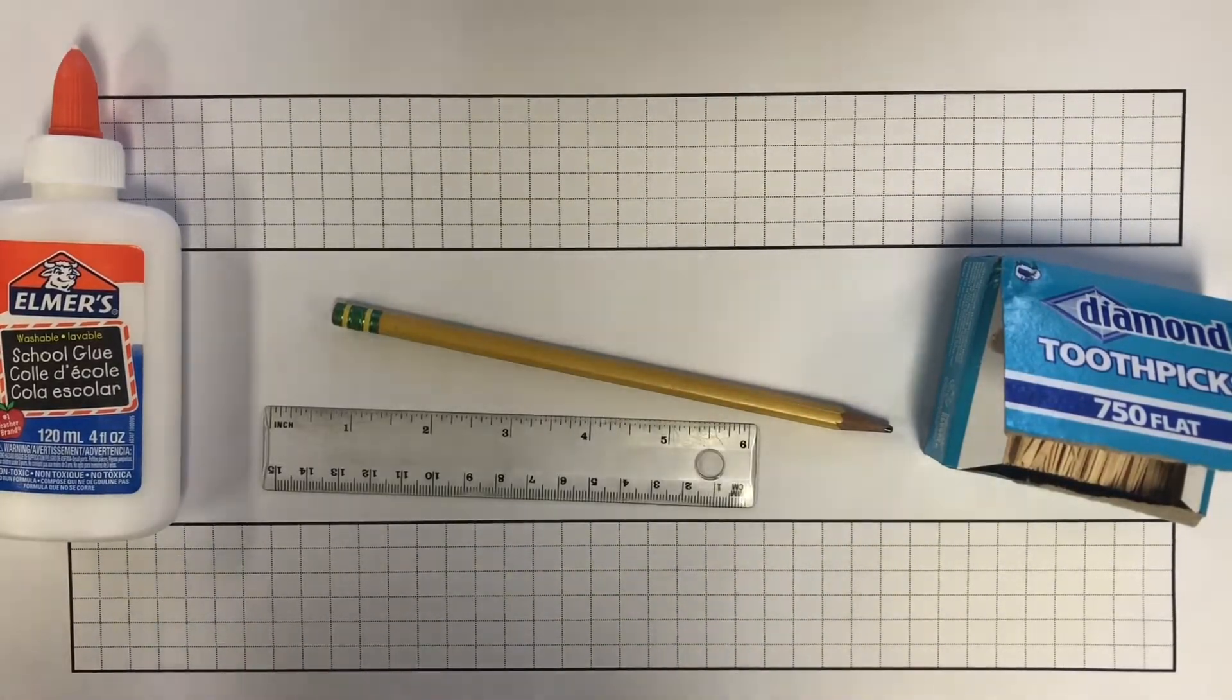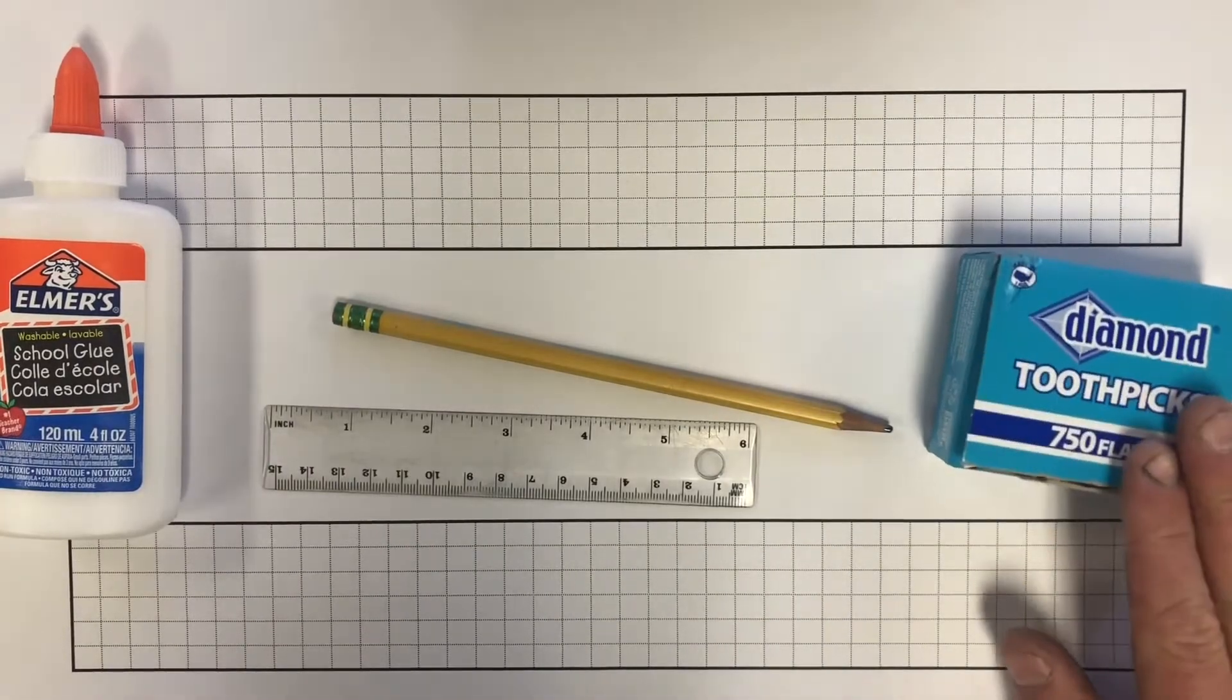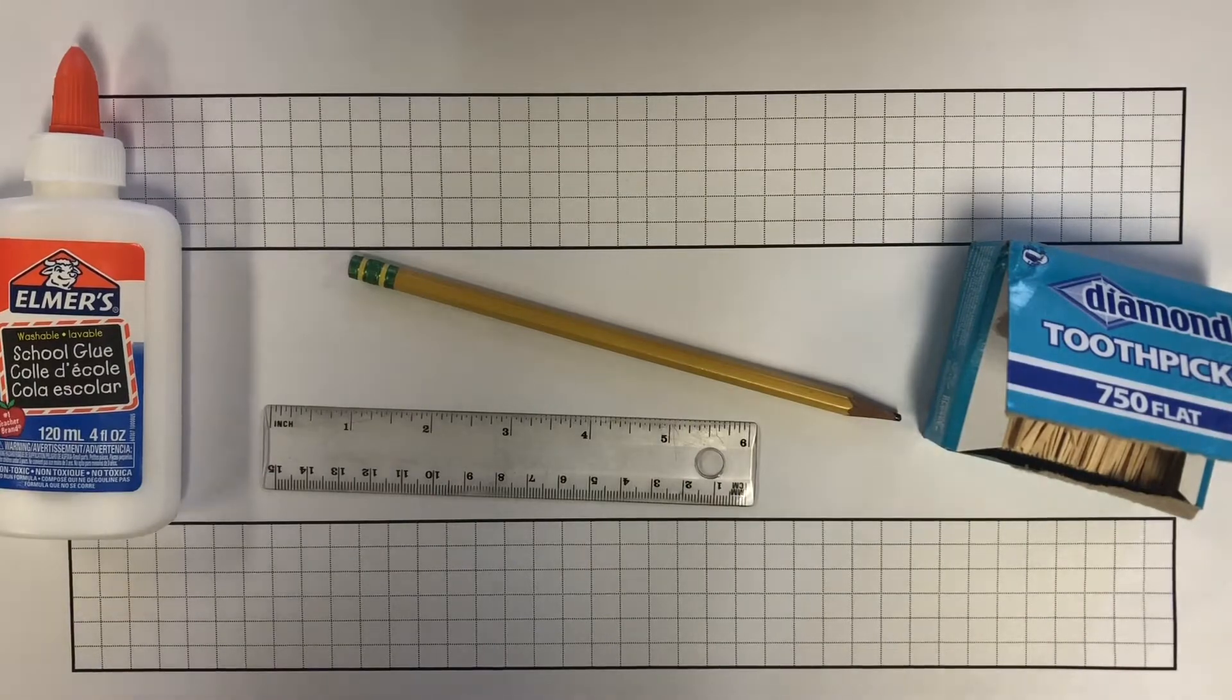All right guys, today we're going to take a little bit of time and learn how to do toothpick bridges. You should have glue, some toothpicks, a ruler, a pencil, and a piece of wax paper that I'll show you in a little bit.